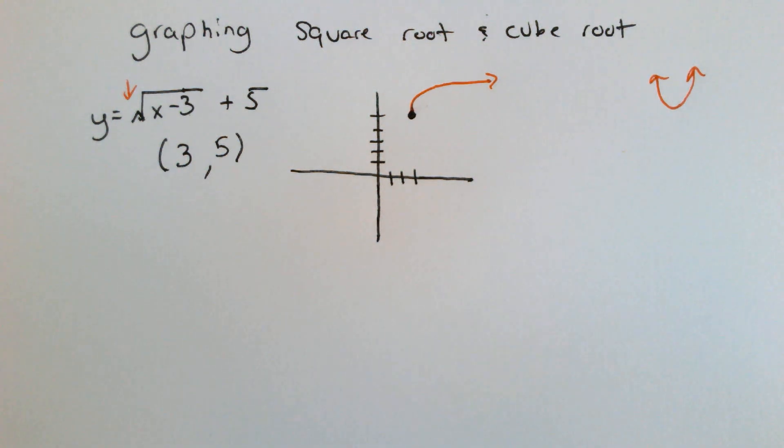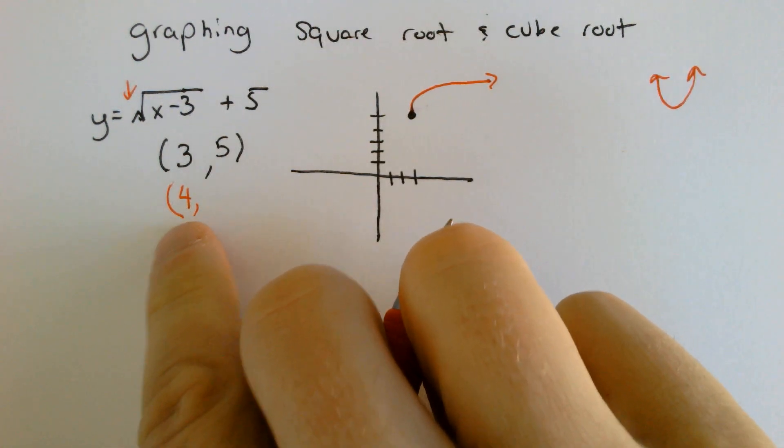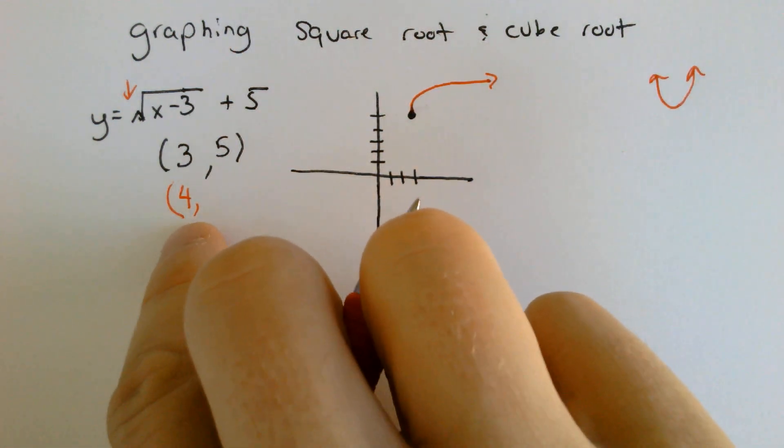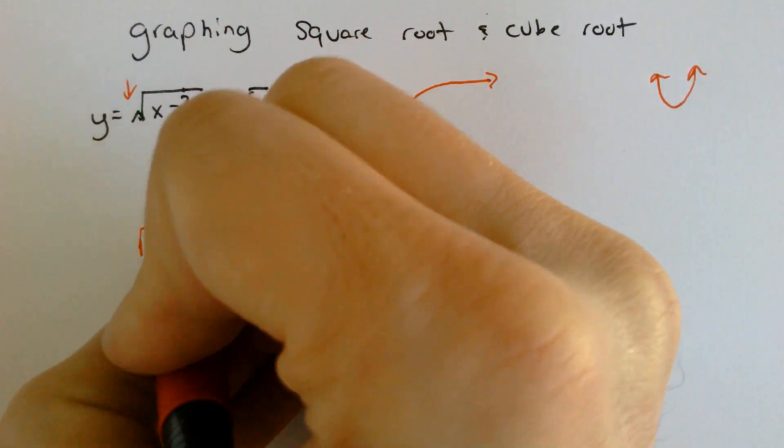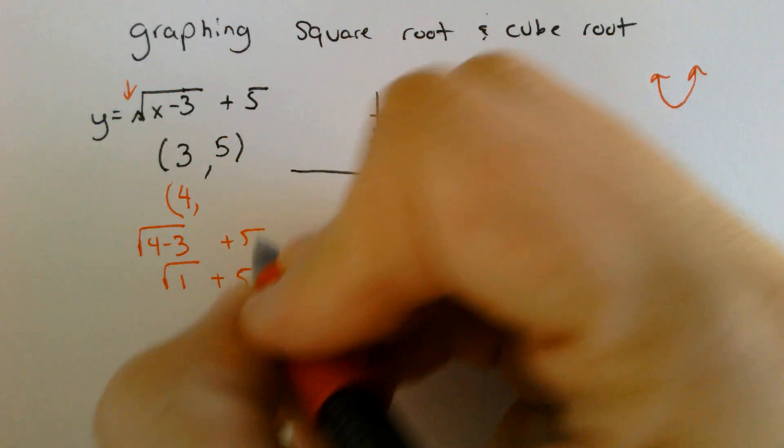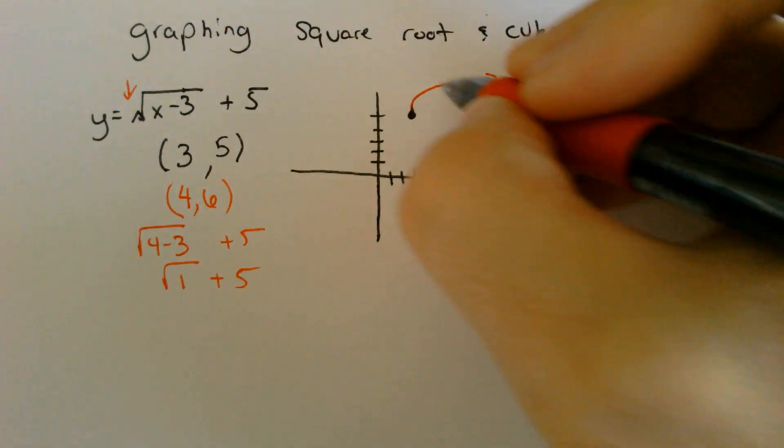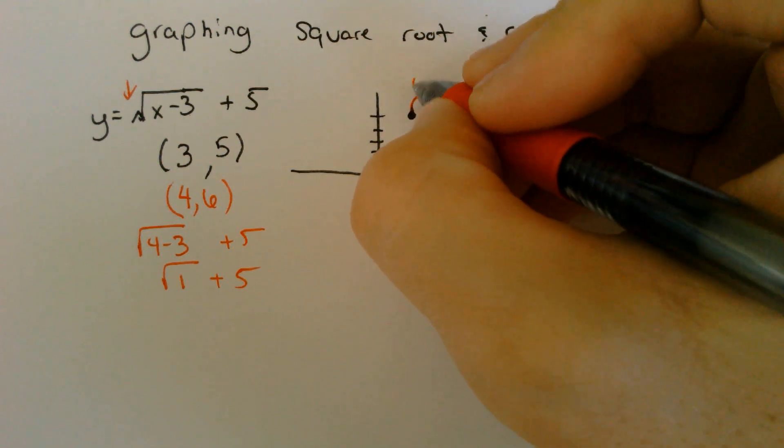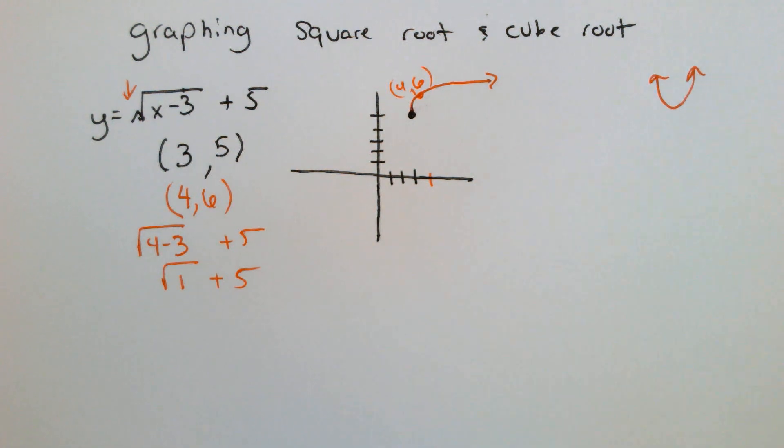Some teachers will ask you to plug in a point. I do not typically ask my students to plug in a point, but if you did, I would recommend plugging in the point 1 further to the right. So if you plugged in 4, that would be 4 minus 3 plus 5. The square root of 1 plus 5 is 1 plus 5, which is 6. So this very next point is at 4, 6. I do not require it for my students though, it depends on the teacher.